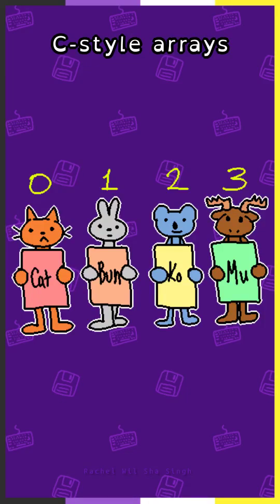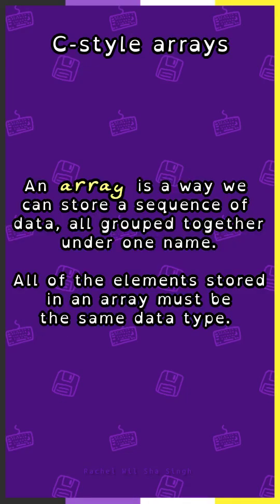C-Style Arrays. An array is a way we can store a sequence of data, all grouped together under one name. All of the elements stored in an array must be the same data type.